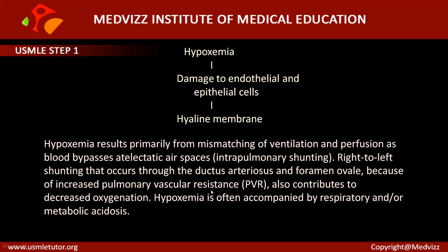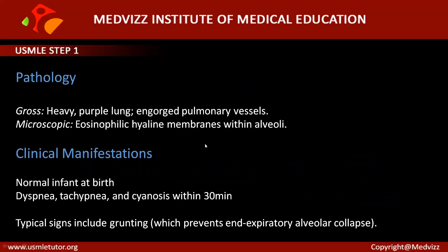This right-to-left shunting mainly occurs through the ductus arteriosus as well as foramen ovale, mainly because there will be increased pulmonary vascular resistance which also contributes to decreased oxygenation. The intrapulmonary shunting and right-to-left shunting through the ductus arteriosus and foramen ovale because of increased pulmonary vascular resistance leads to severe hypoxemic states, and hypoxemia is always accompanied by respiratory as well as metabolic acidosis.